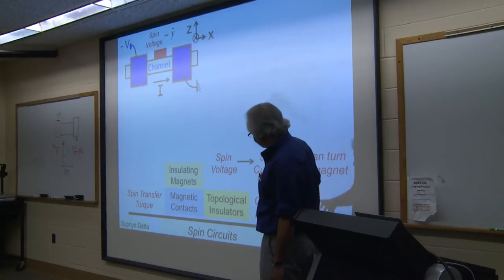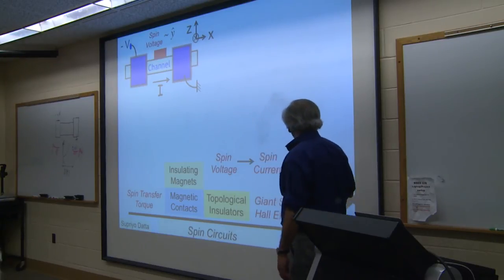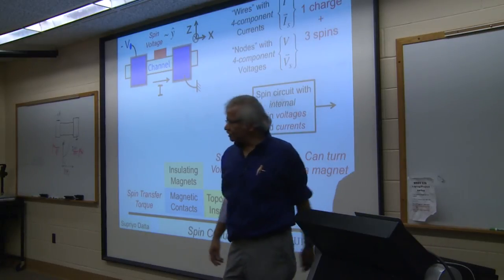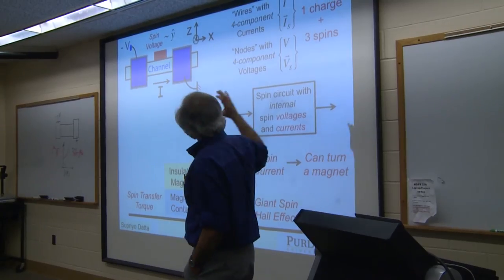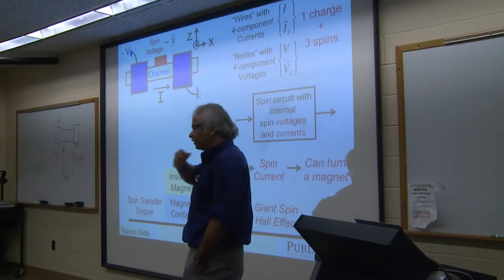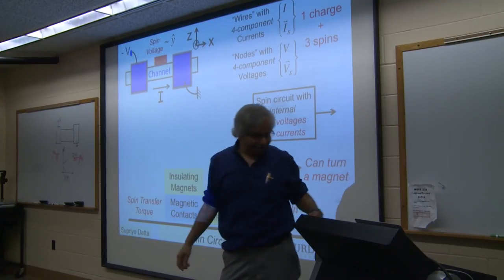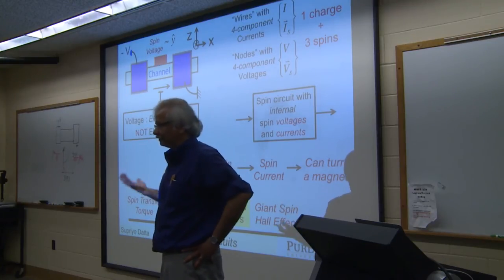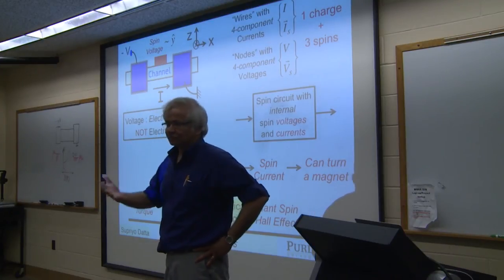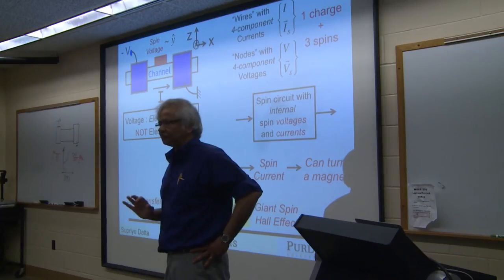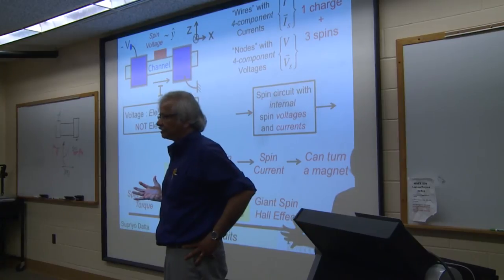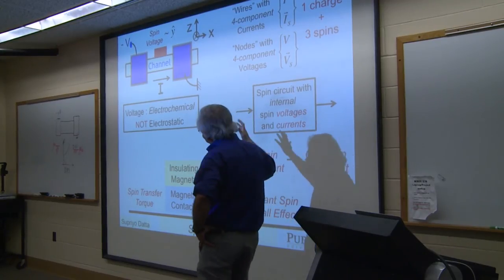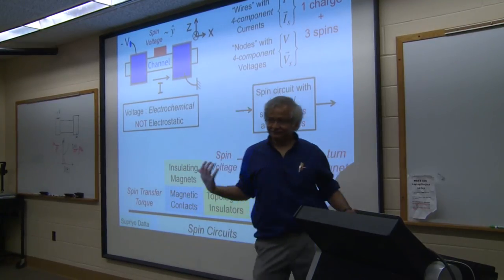Spin potential is very hard to understand if you think in terms of electric fields, because there is only one electrostatic potential regardless of spin species. But once you think in terms of electrochemical potential, every species has its own potential — upspins, downspins, different species can be controlled independently. This is exactly what happens in many biological systems. The key message: move away from thinking that electric fields drive electrons.